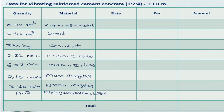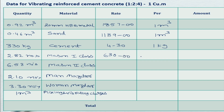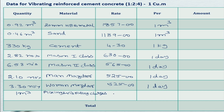Summary of site rates: 20 mm HBG metal costs 1857 rupees per cubic meter; sand costs 1189 rupees per cubic meter; cement is 4 rupees 30 paise per kg. Mason first class wages are 630 rupees per day; mason second class wages are 565 rupees per day; men and women mazdoor wages are 525 rupees per day. Mixing and vibrating charges are 120 rupees per cubic meter.